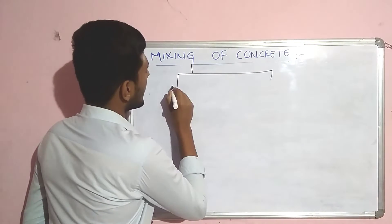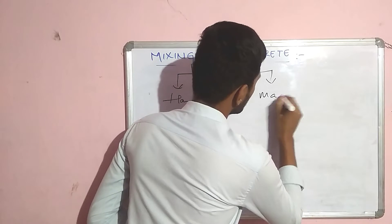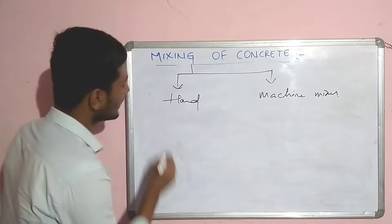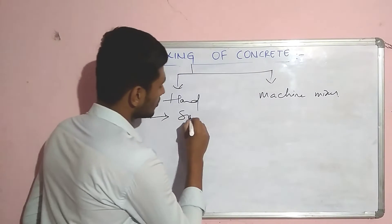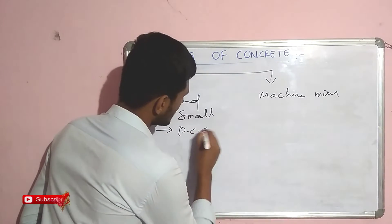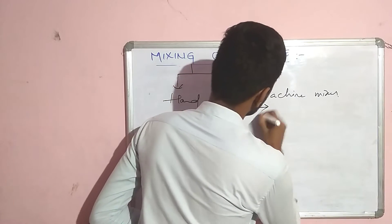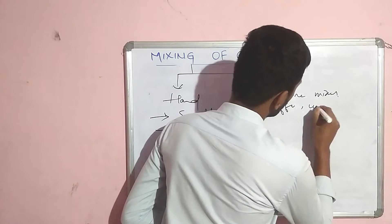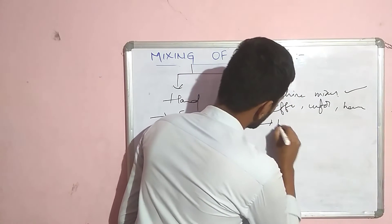One is hand mixing and another is machine mixing. Generally hand mixing is used for small works. It is generally useful for plain cement concrete (PCC) where we are not using reinforcement. For machine mixing, it is essential for a uniform and homogeneous mix. Machine mixing is preferred for large scale works.